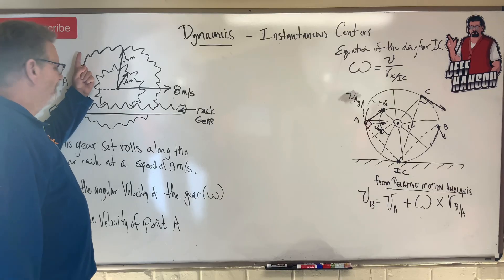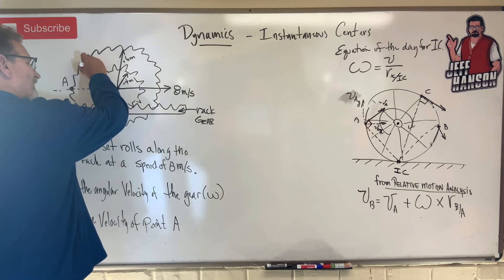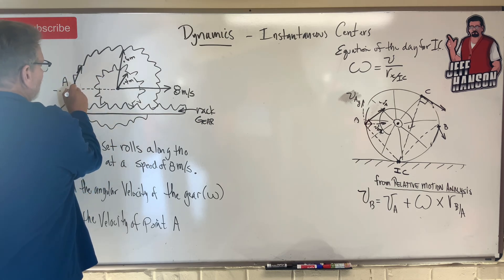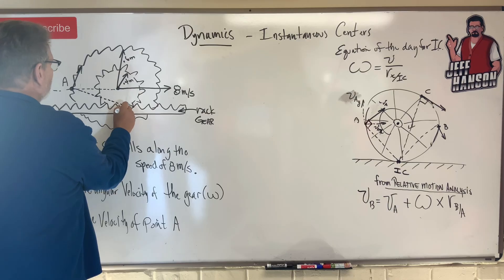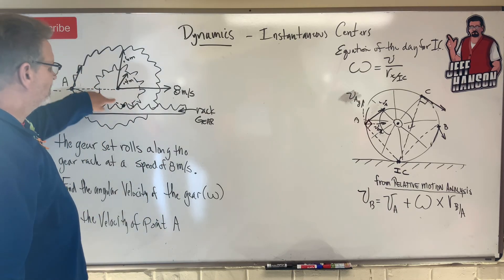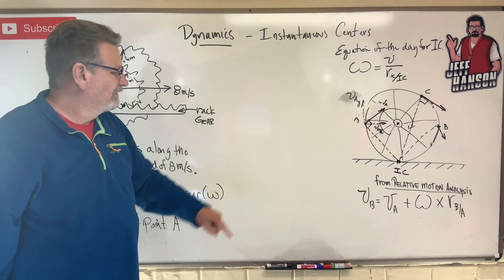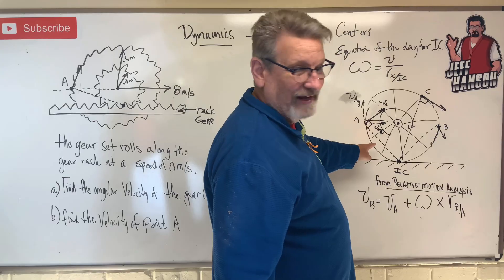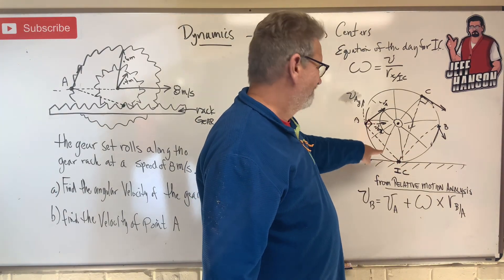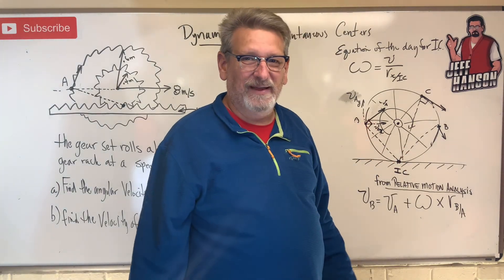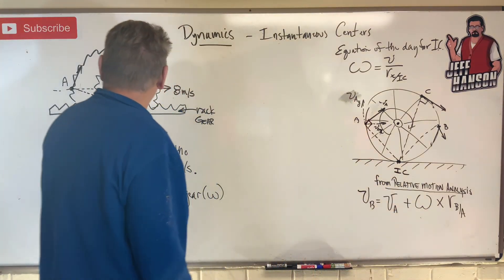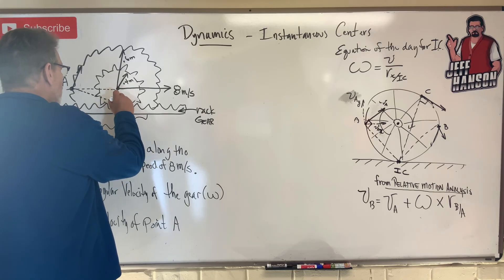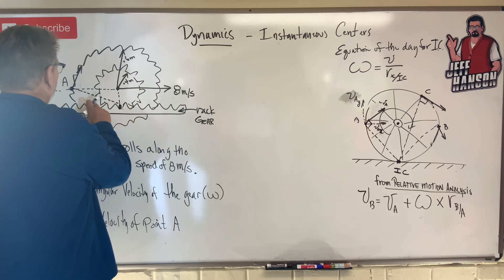Point A - you might think the velocity is straight up, but it's really not. Point A wants to be over here in a second, so its velocity is really over here. If I draw that tangential line it's going to be at the bottom of this gear, just like a wheel rolling across the ground. The instantaneous center is going to be directly below here, at the bottom of the part.